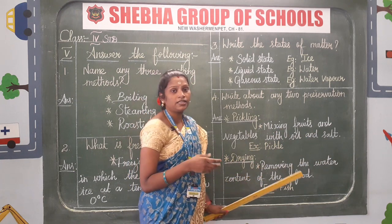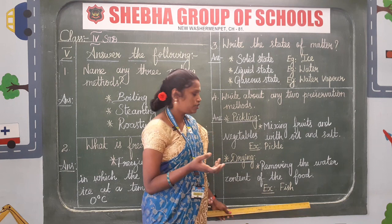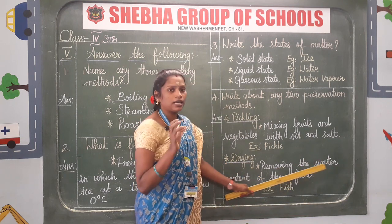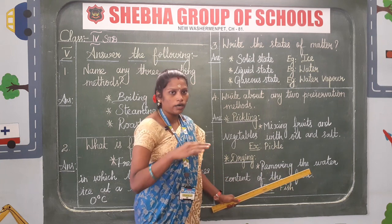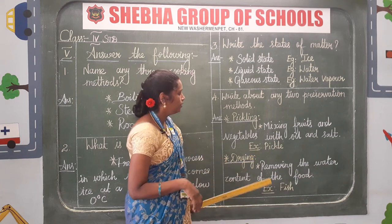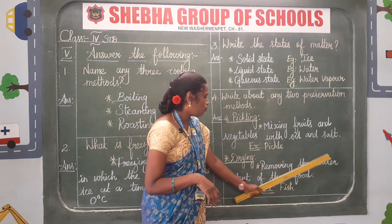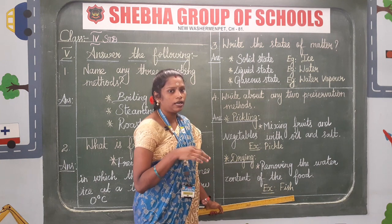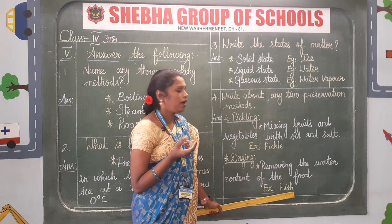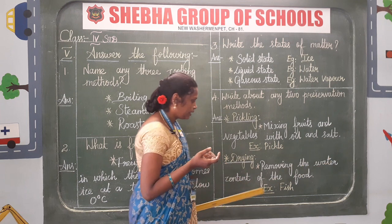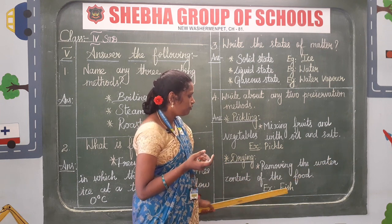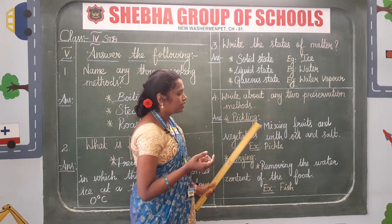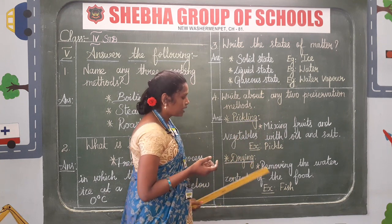The other preservation method is drying — removing the water content of the food by placing the food item in sunlight. For example: fish. Drying — removing the water content of the food. Example: fish. The two preservation methods are pickling and drying.